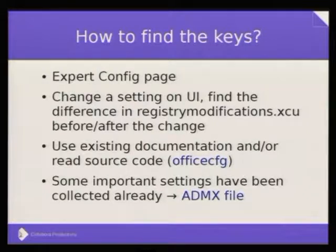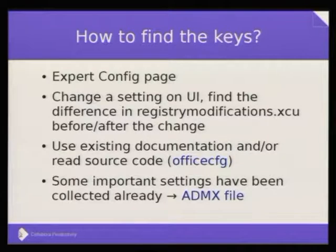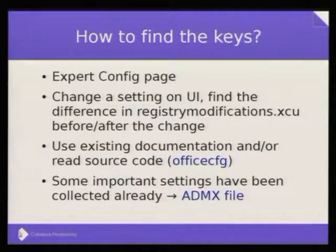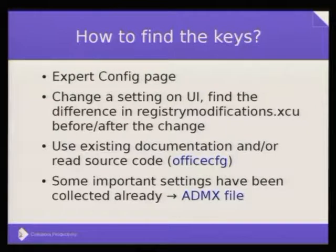It's a little tricky to find the settings and know what to write into the registry. One option is to read the expert config page or change settings on the UI and find the registry modifications. It's not for the average user, but luckily Collabora maintains a group policy administrative template which contains around 100 important settings and can be extended. We added one or two more in the last few weeks. It can be downloaded and used for either LibreOffice or CollaboraOffice — it's the same. There's a link on the slide.